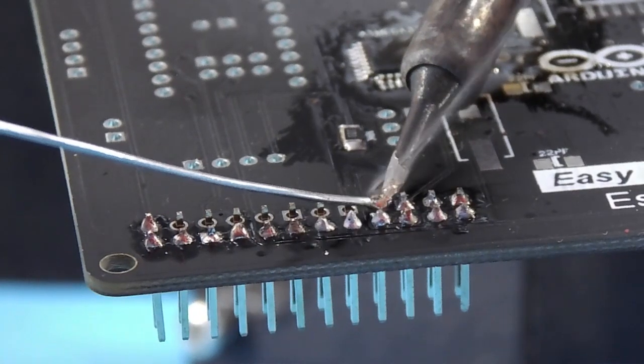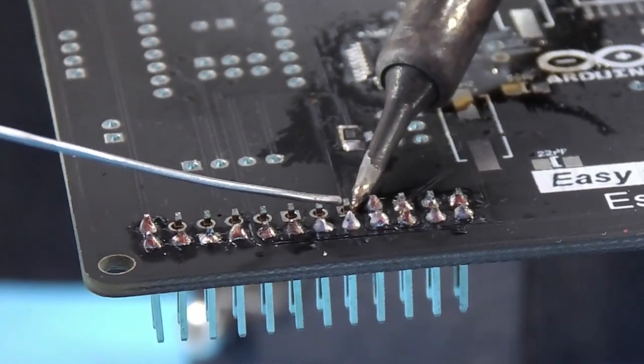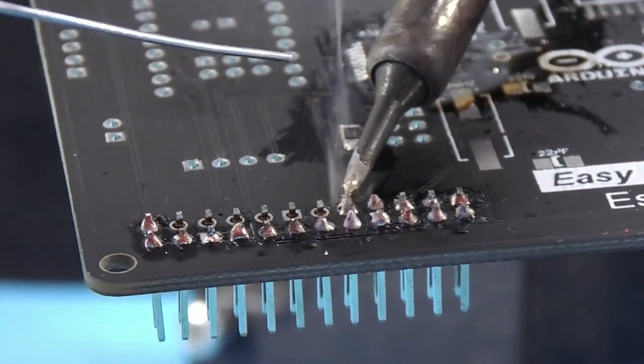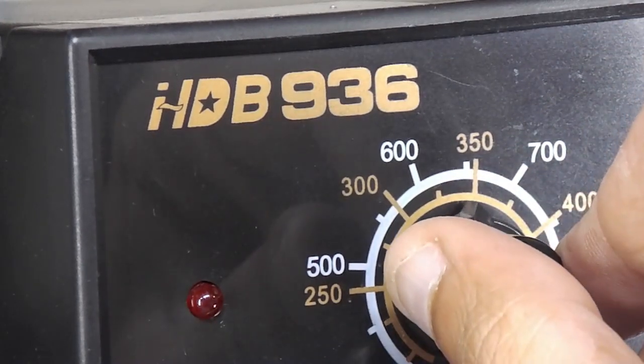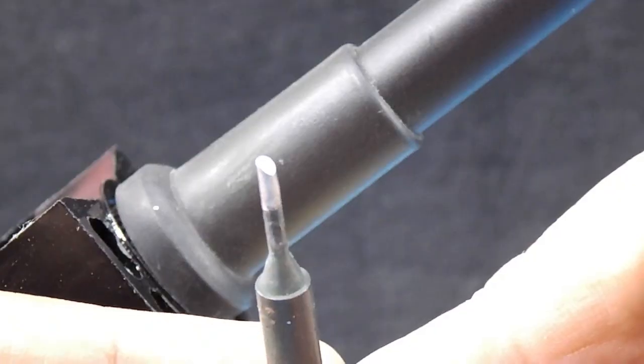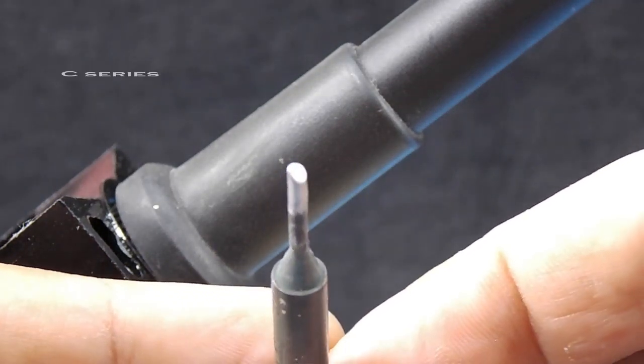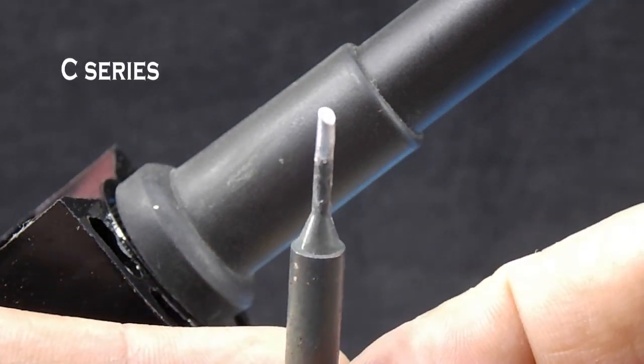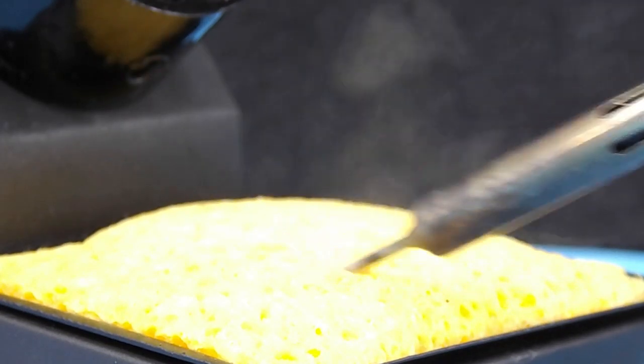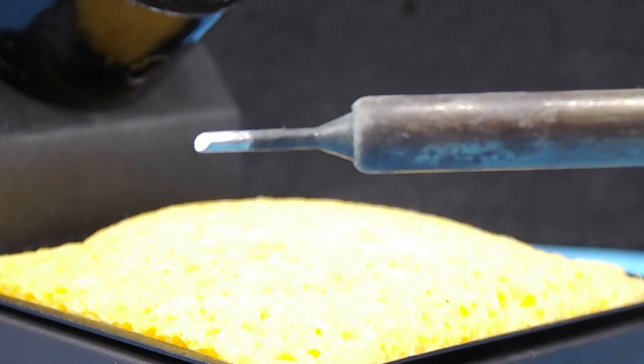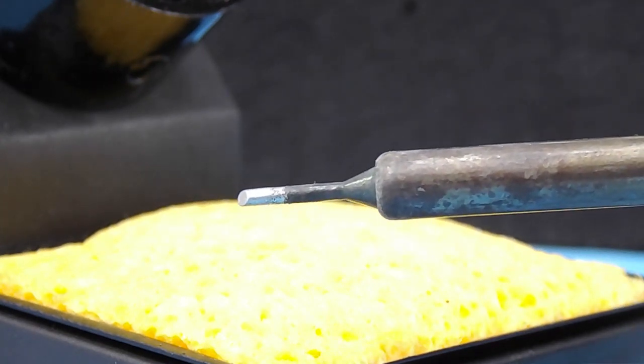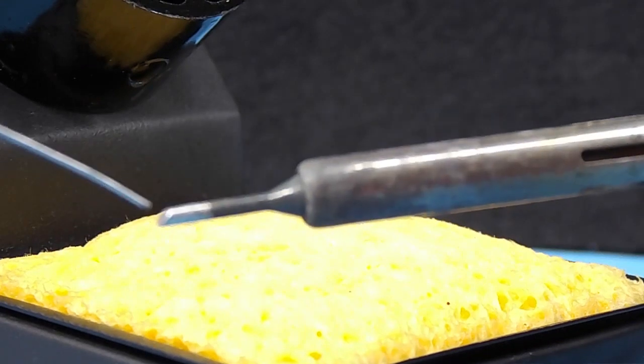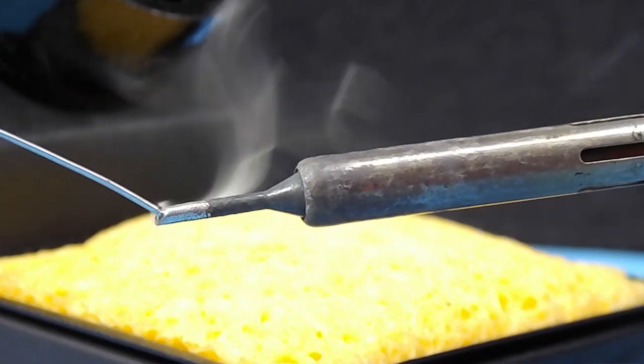While soldering you need to select the right temperature and the right soldering tip. Here I'm going to set my soldering station to 350 degrees Celsius and using the SMD tip from C-series. It's very important to start soldering with a clean shiny tip. To achieve this I'm using wet soldering sponge here. Then tin your soldering tip.